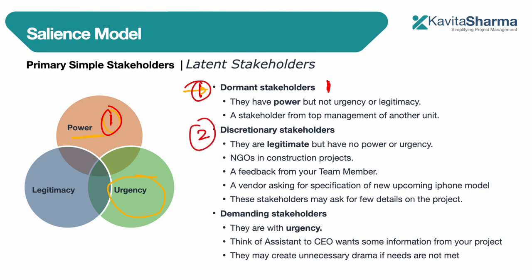The second latent type is discretionary stakeholders — these stakeholders have legitimacy only, with no power or urgency. Think of a roadways project again: environmental NGOs may request certain things. As a project manager, you have a discretionary decision about whether to cater to their needs or not, based on your project objectives.